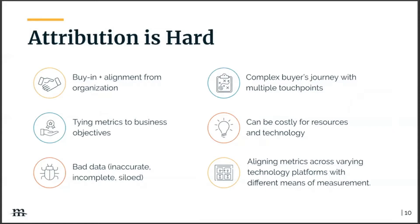Bad data is something marketers are very familiar with — most organizations face inaccurate, incomplete, or completely siloed data. The complex journey with multiple touchpoints is only getting more complicated, making attribution ever more challenging. Cost can be reduced through open source technologies like Google Analytics, Data Studio, and open source CMSs like Drupal, but attribution can still be costly in terms of people and outsourcing. Additionally, attribution measurements look different across platforms — Facebook measures differently than Google Analytics.